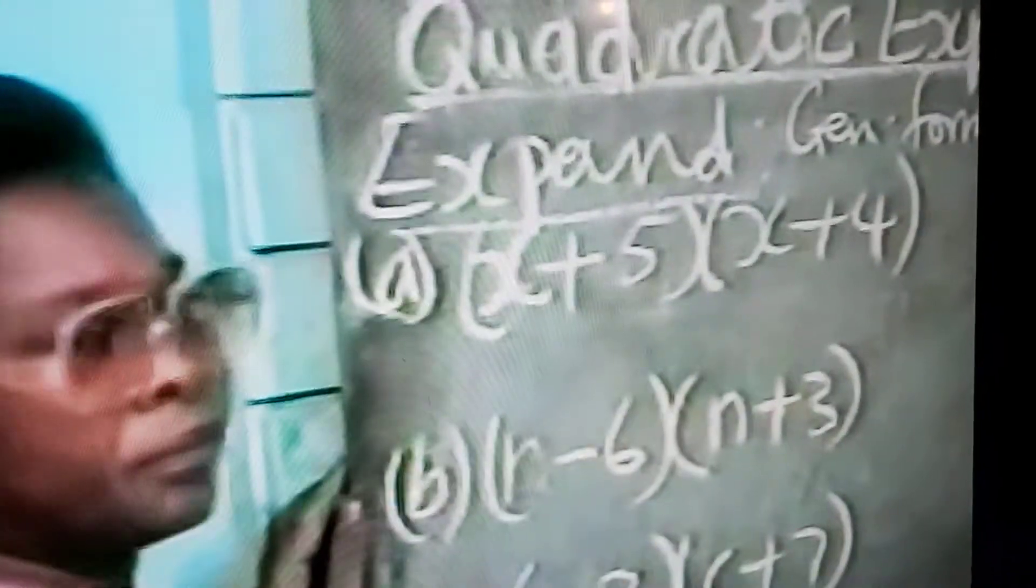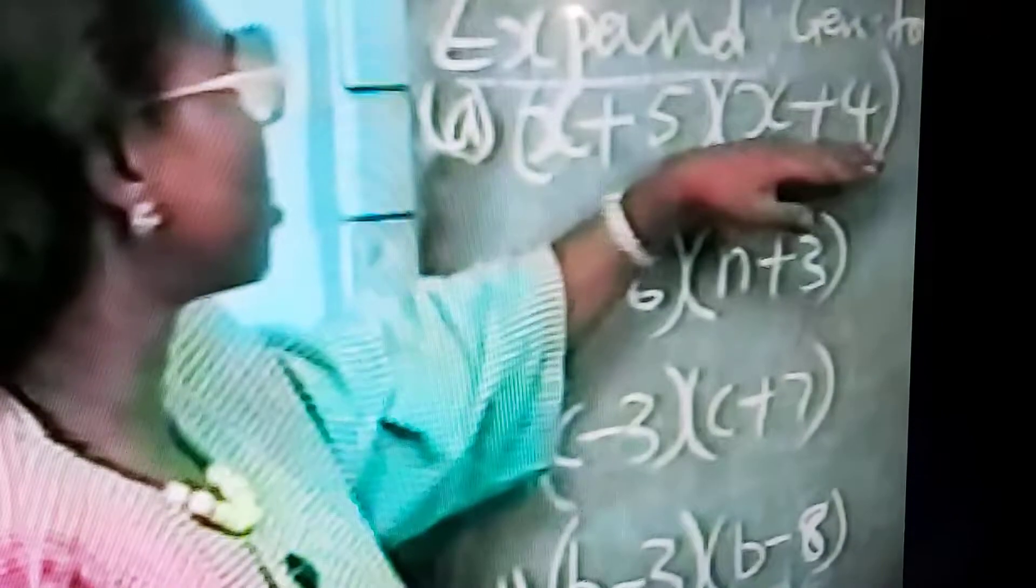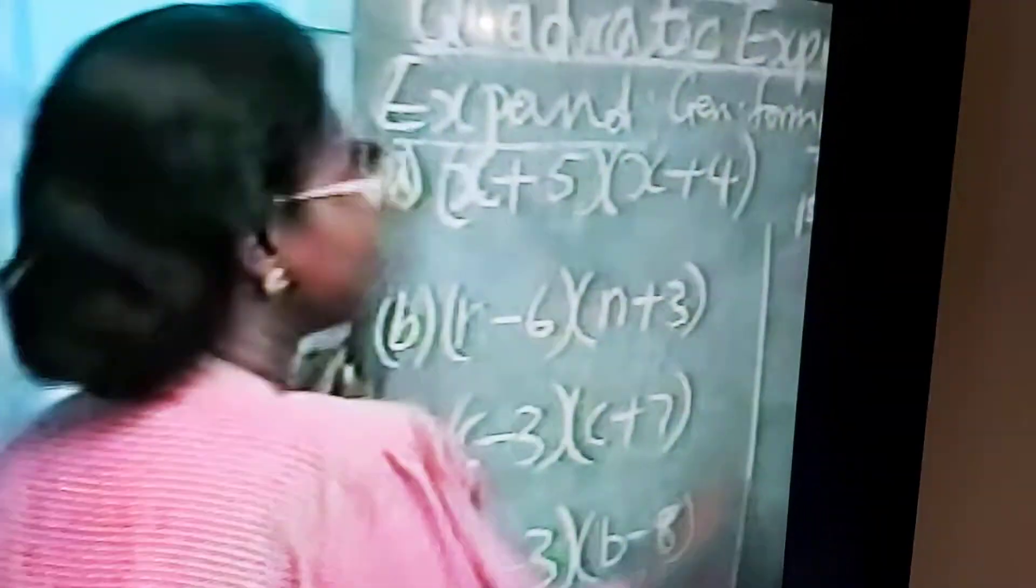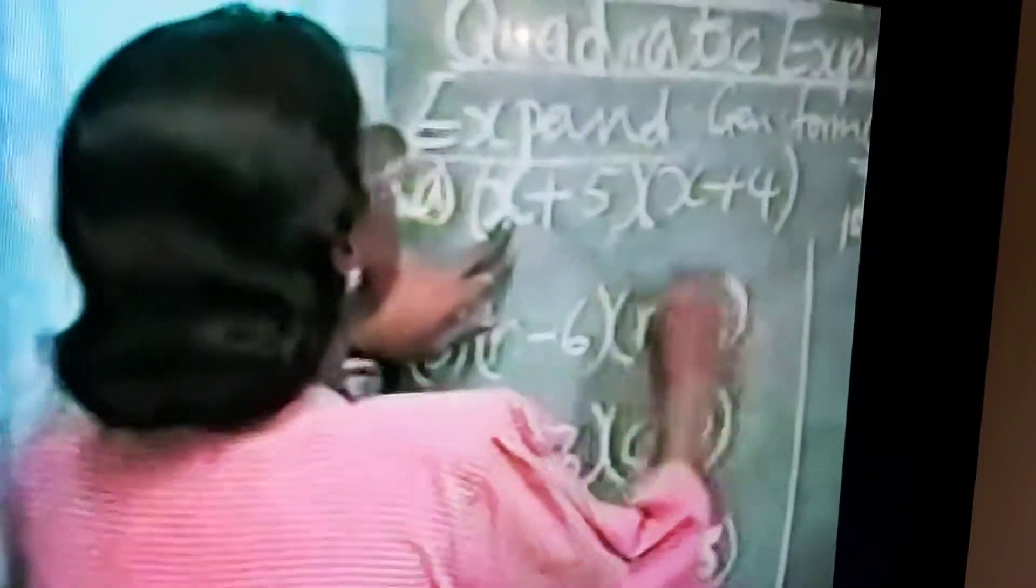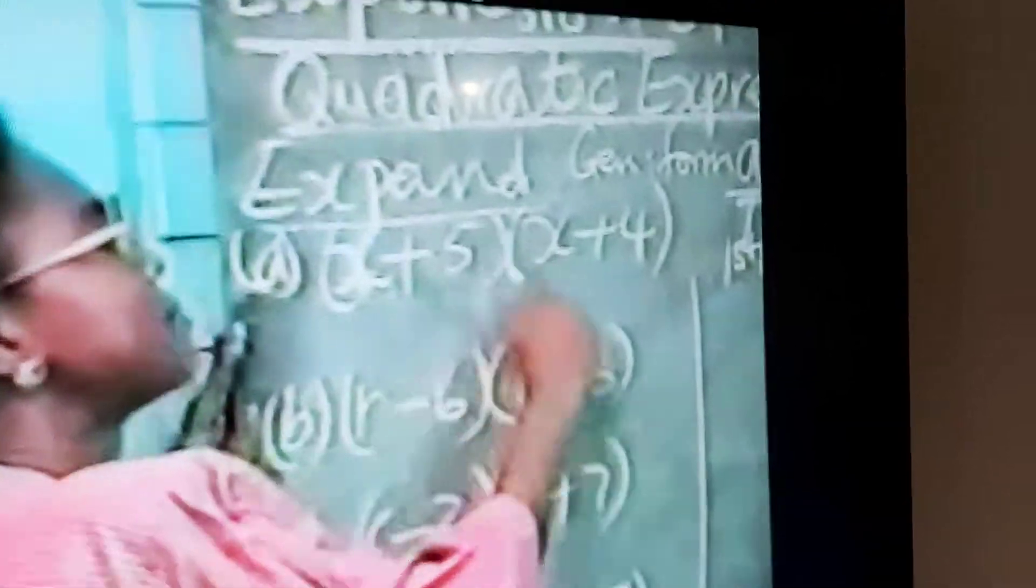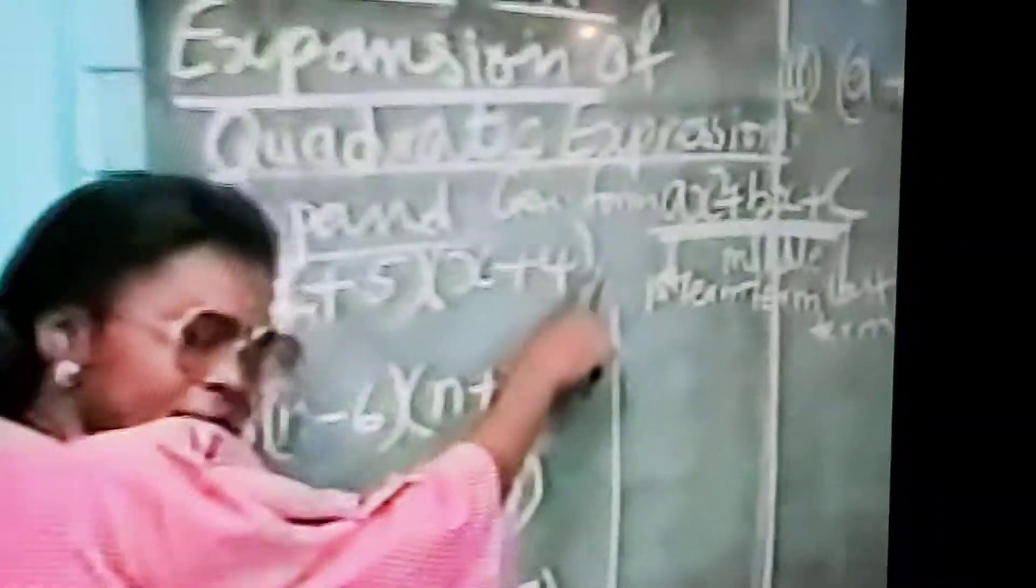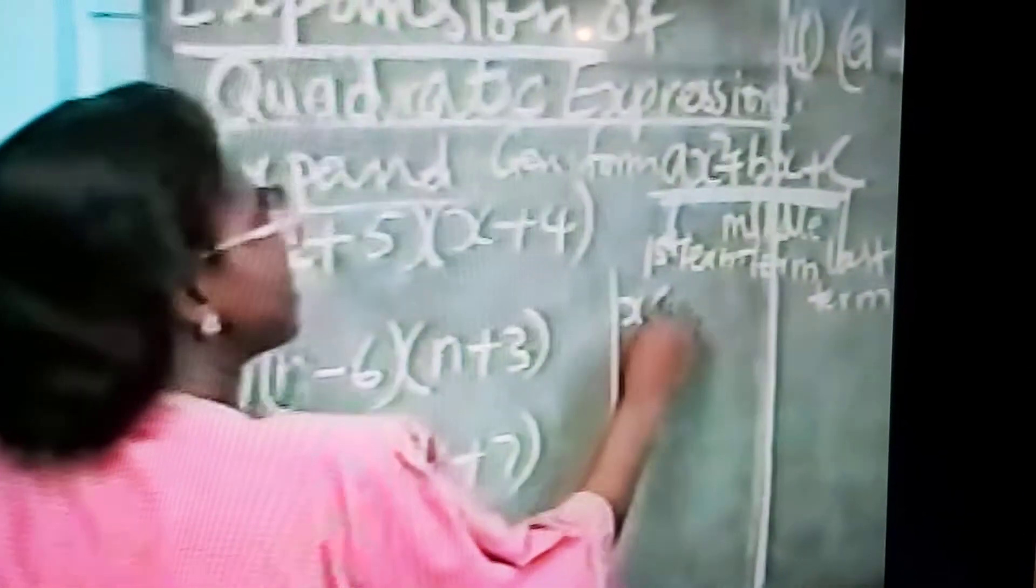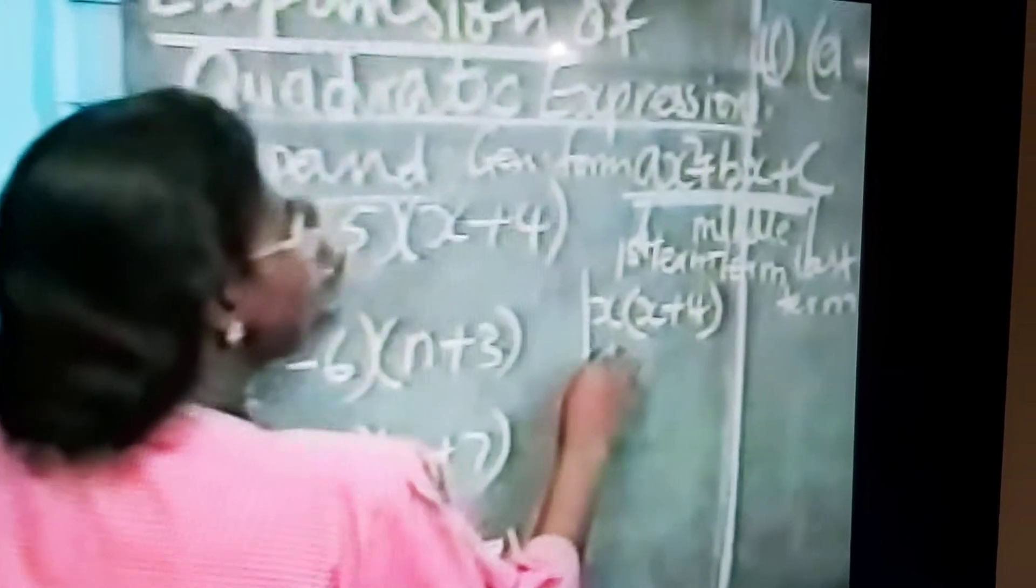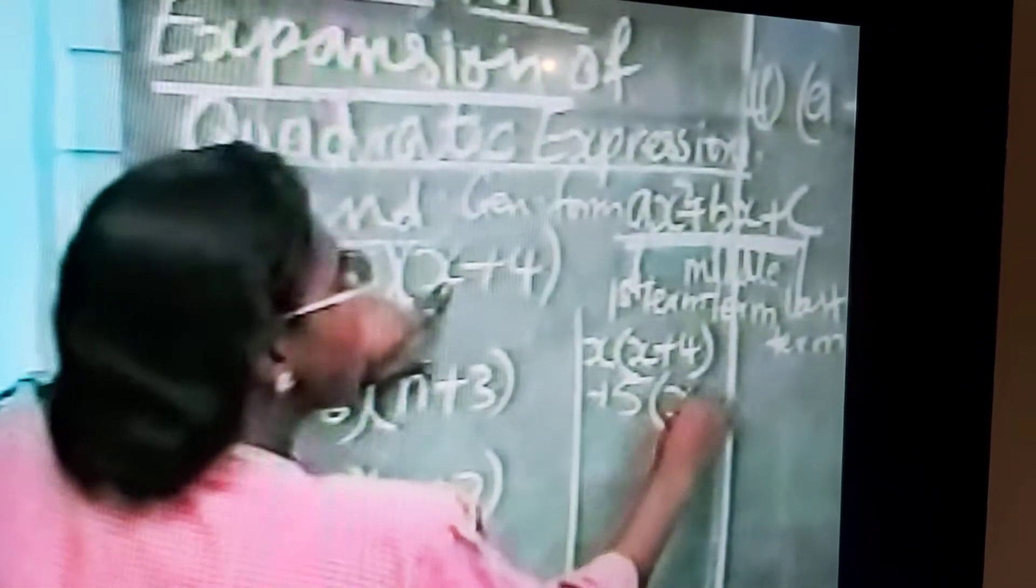So to expand, I know that most of you must have done this in the simpler way. I'll do that on this side somewhere here. You have your x plus 5 into x plus 4 and you say that means x times this bracket plus 5 times the same bracket. So first you have your x times x plus 4 and then you have your plus 5 times the same x plus 4.